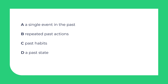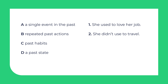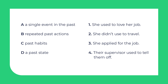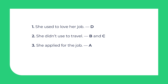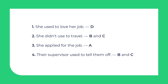Here are the sentences: She used to love her job. She didn't used to travel. She applied for the job. Their supervisor used to tell them off. Pause the video and do the task. Two answers are possible. So, she used to love her job — this is D, a past state. She didn't used to travel — this is B, repeated past actions, and C, past habits. She applied for the job — this is A, a single event in the past. Their supervisor used to tell them off — this is also B, repeated past actions, and C, past habits.